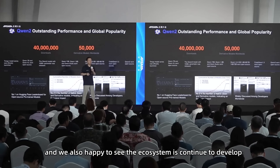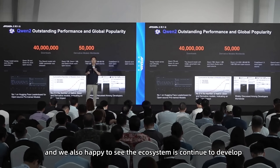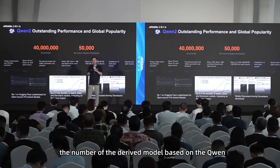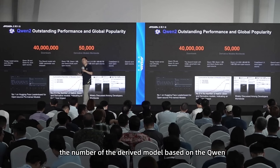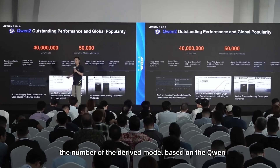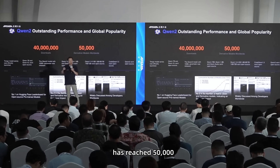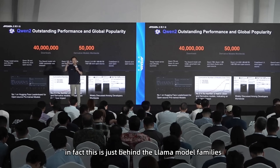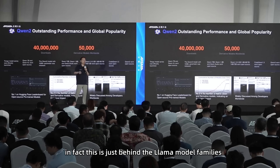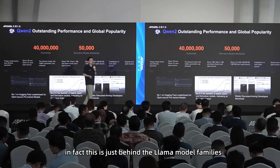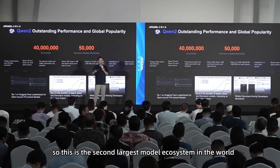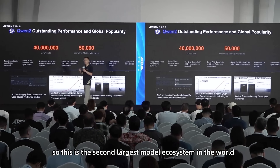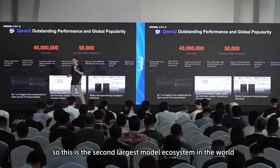We're also happy to see the ecosystem is continuing to develop. The number of derived models based on Qwen has reached 50,000 — just behind the LLaMA model families. This is the second largest model ecosystem in the world.